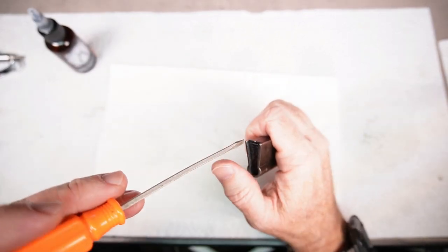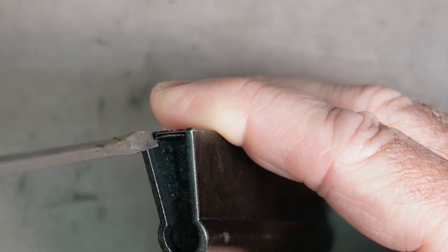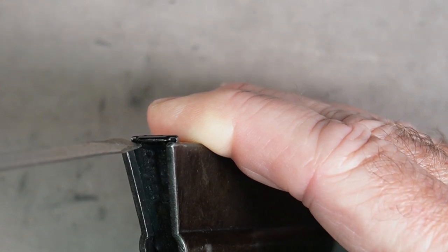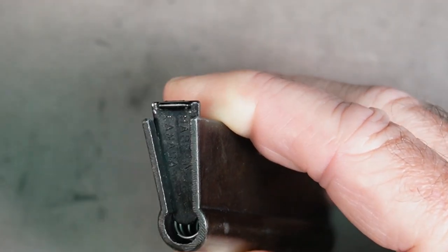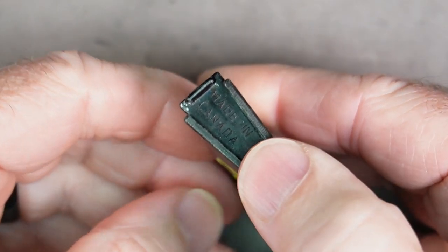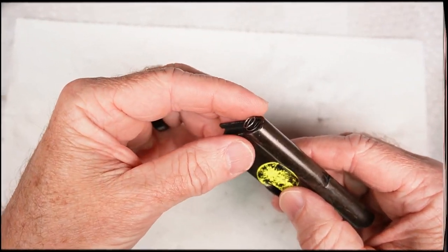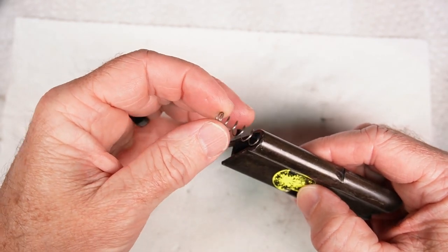Put it in this little gap here. Get the screwdriver in here like this, twist it counterclockwise, and it'll just lever that plate right up. Put your thumb over here so the spring doesn't fly out, and just pull that off. Then your spring—if it doesn't pop out, you can pull it out.